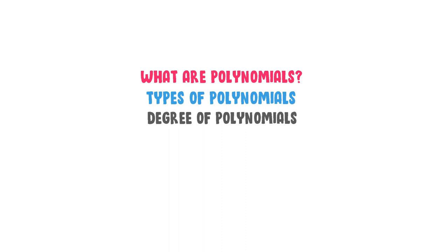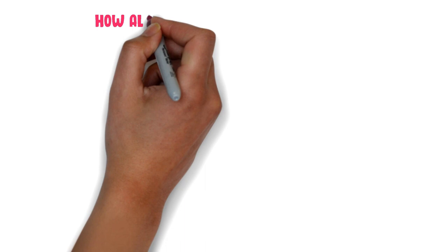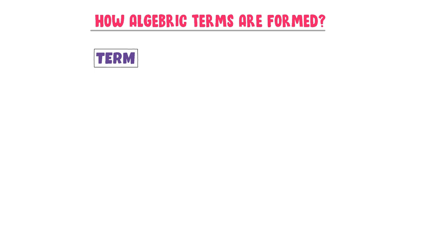Firstly, let me teach you how algebraic terms are formed. Every algebraic term is made up of three things: C, V, and P. C stands for constant or coefficient, V stands for variable, and P stands for power.